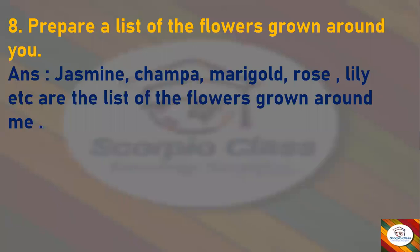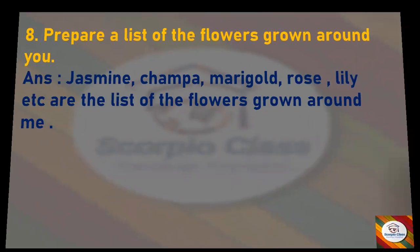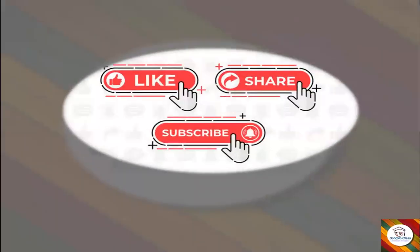Next question: Prepare a list of flowers grown around you. Answer: Jasmine, champa, marigold, rose, lily, etc. are the list of flowers that grow around me. Here you can also add other flower names which you see growing in and around you — you can make a list of your own flowers. With this, you come to an end with the notes of this chapter.